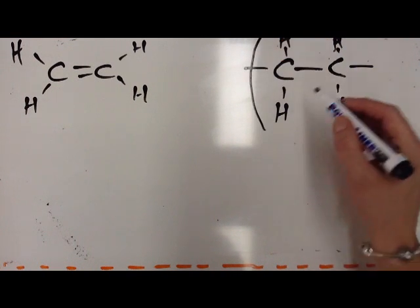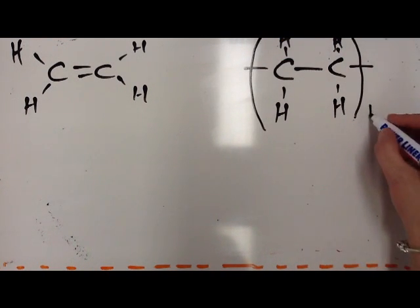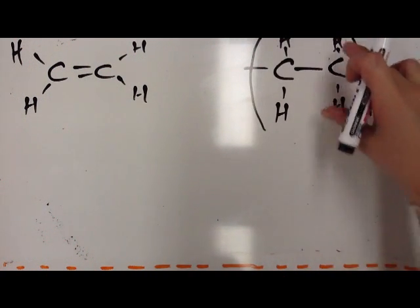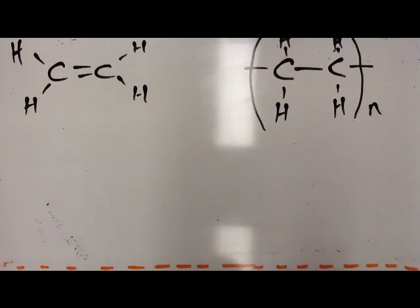Next, draw a big bracket around and then a little n. This shows the n, meaning that you've got lots of this repeat unit. And this is one repeat unit.